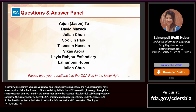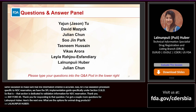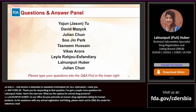Question: What are the options for animal drug products? Our office focuses primarily on human drug registration and listing. For assistance with any animal registration and listing, please reach out to CVM, the Center for Veterinary Medicine, at askcvm@fda.hhs.gov.